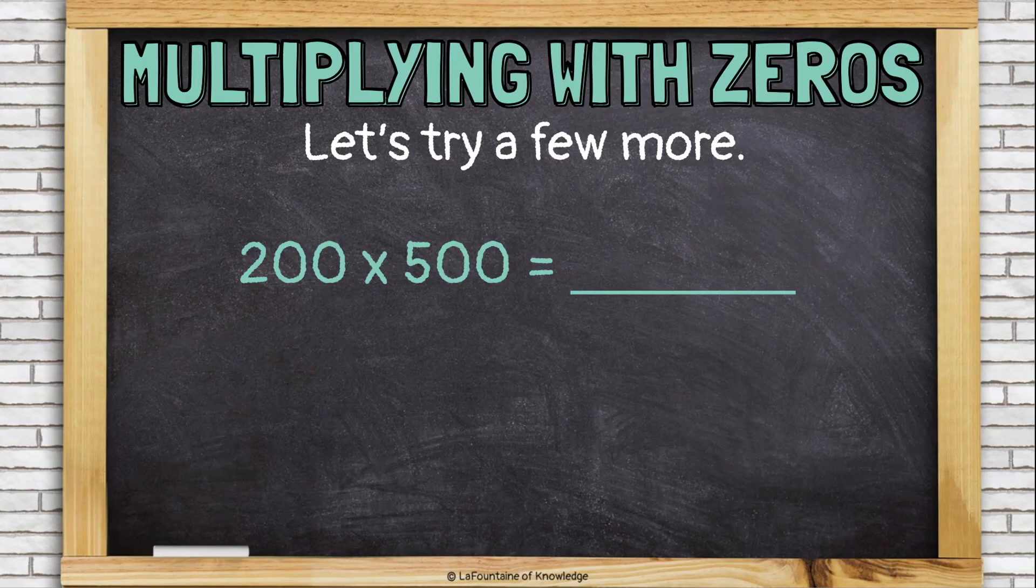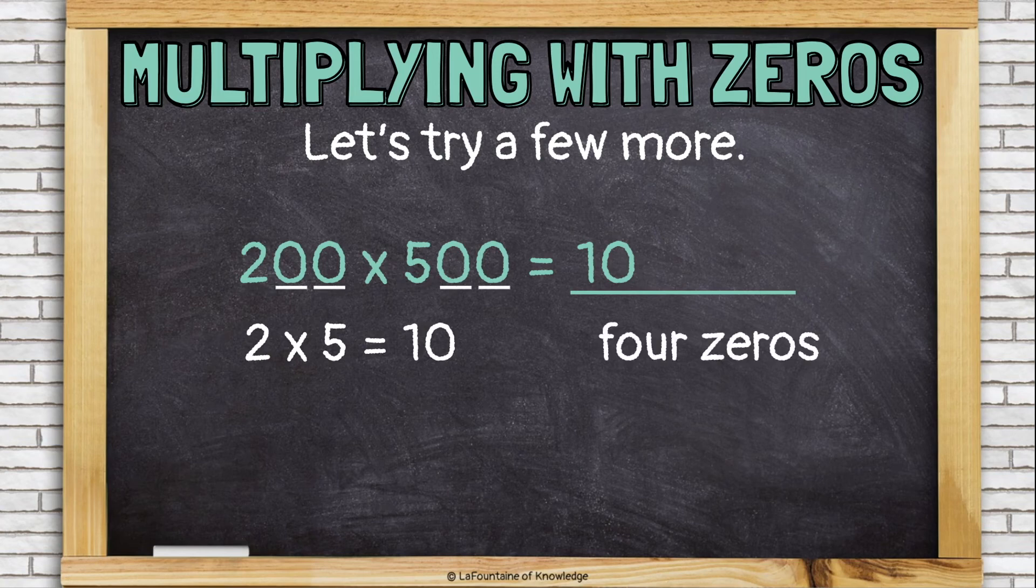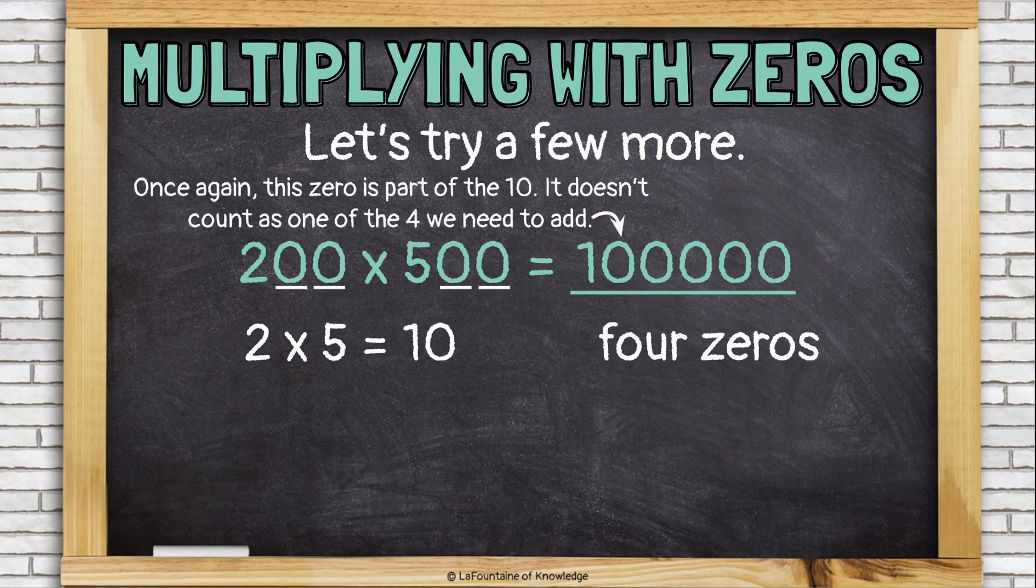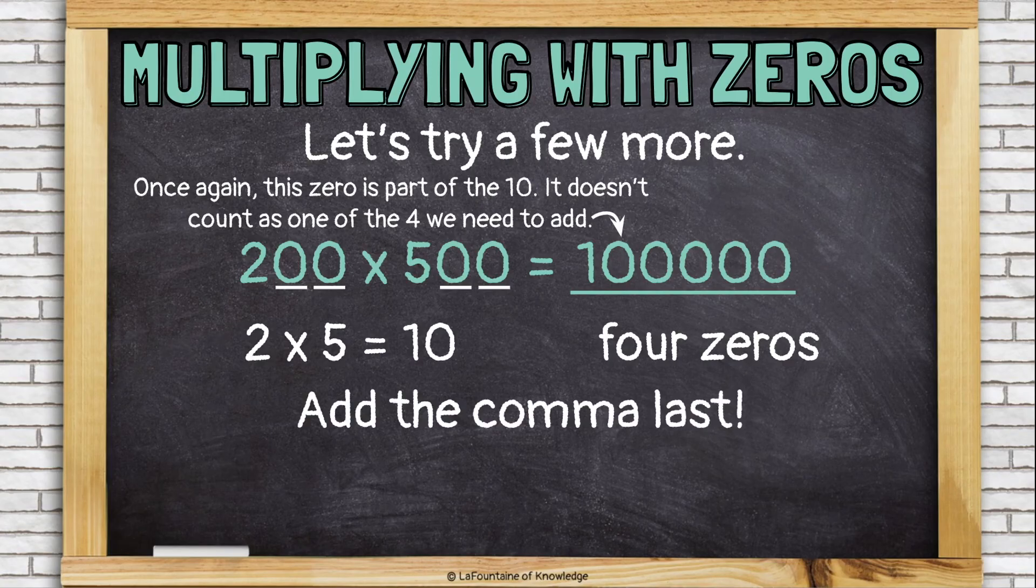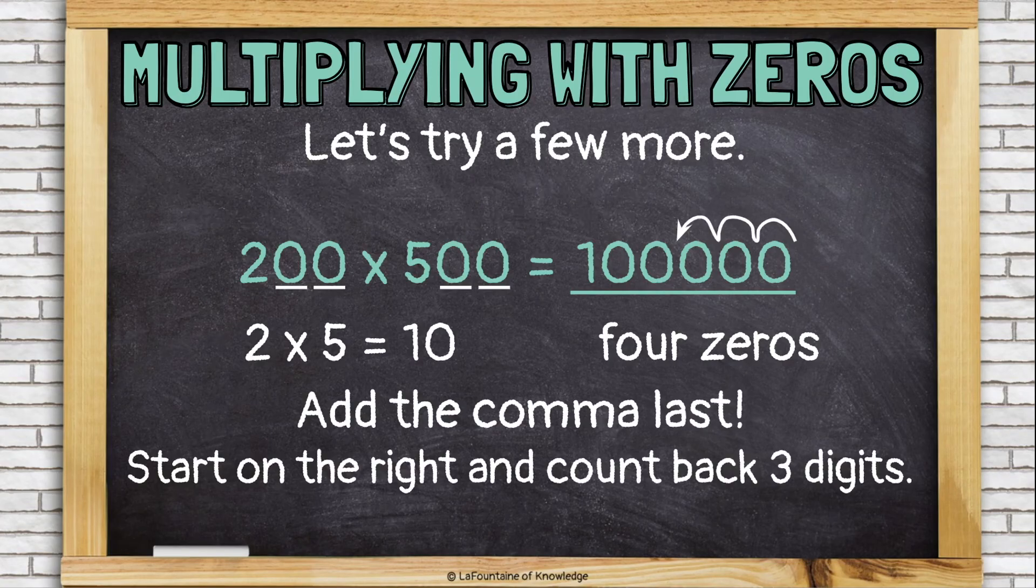200 times 500. Ignore the zeros. Let's do 2 times 5. That's 10. Now, four zeros. Add four zeros after the 10. Remembering that this zero is part of the 10 and not one of the four that we needed to add. So we have 10, and then we have four more zeros. And finally, we will place the comma.